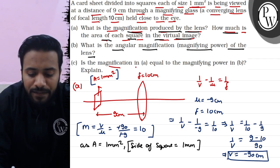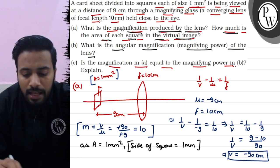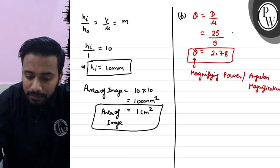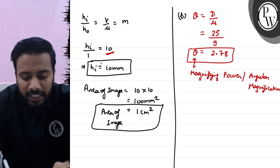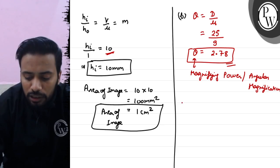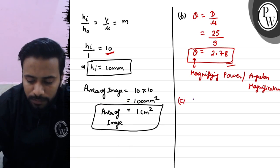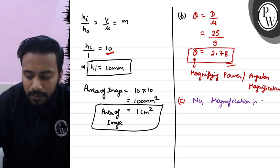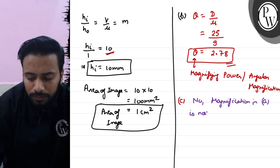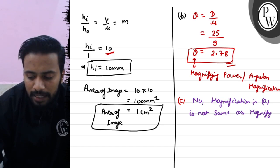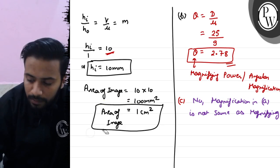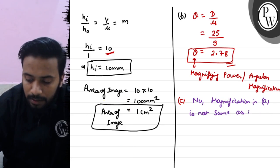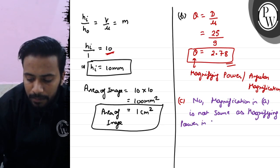For Part C: is the magnification in Part A equal to the magnifying power in Part B? Magnification in Part A is 10, while magnifying power in Part B is 2.78. So the magnification in Part A is not the same as the magnifying power in Part B.